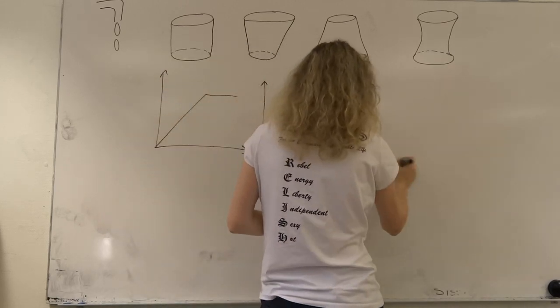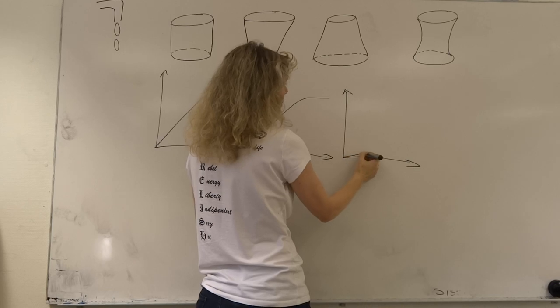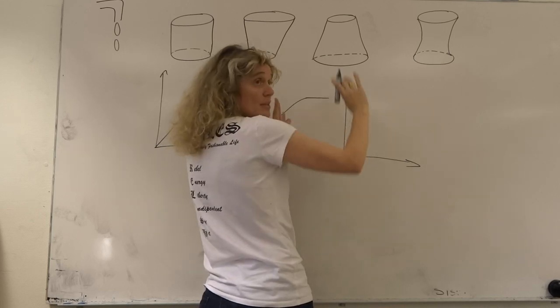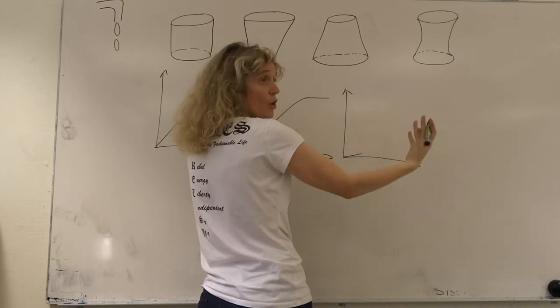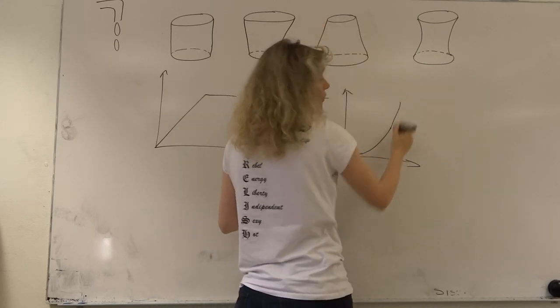This one is going to do the opposite. It's going to start really slowly at the bottom because it's really big - the height is not going to increase very much. We've got a big volume to fill, so it's going to start slowly at the bottom, but then as it gets narrow at the top it's going to go faster.